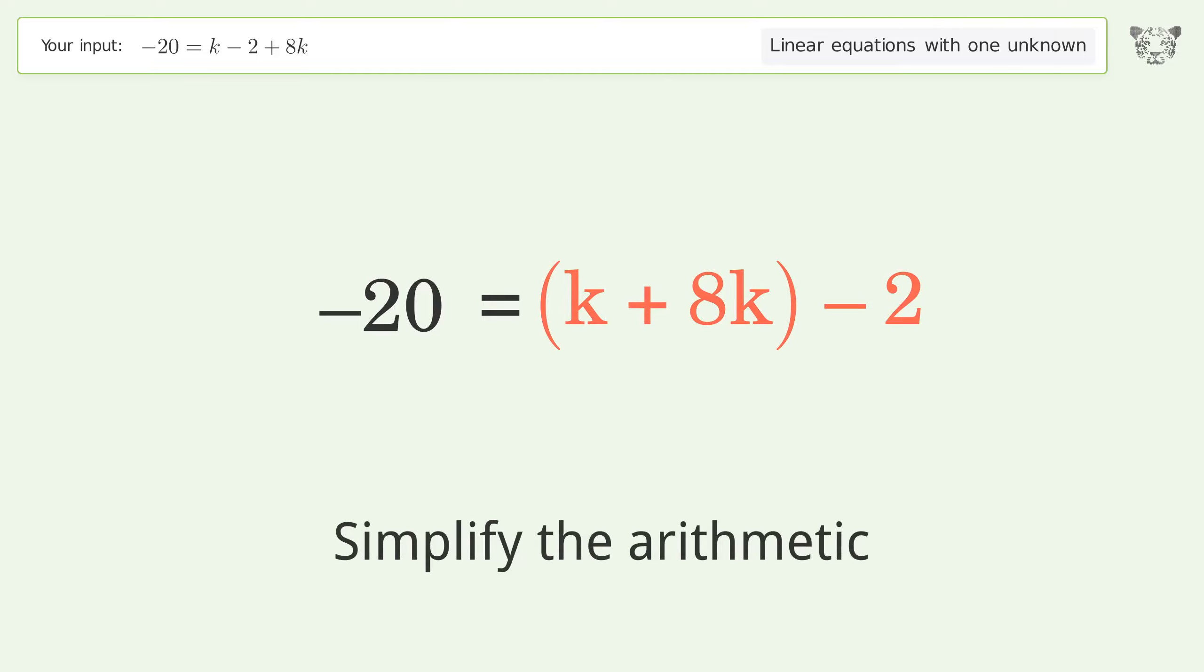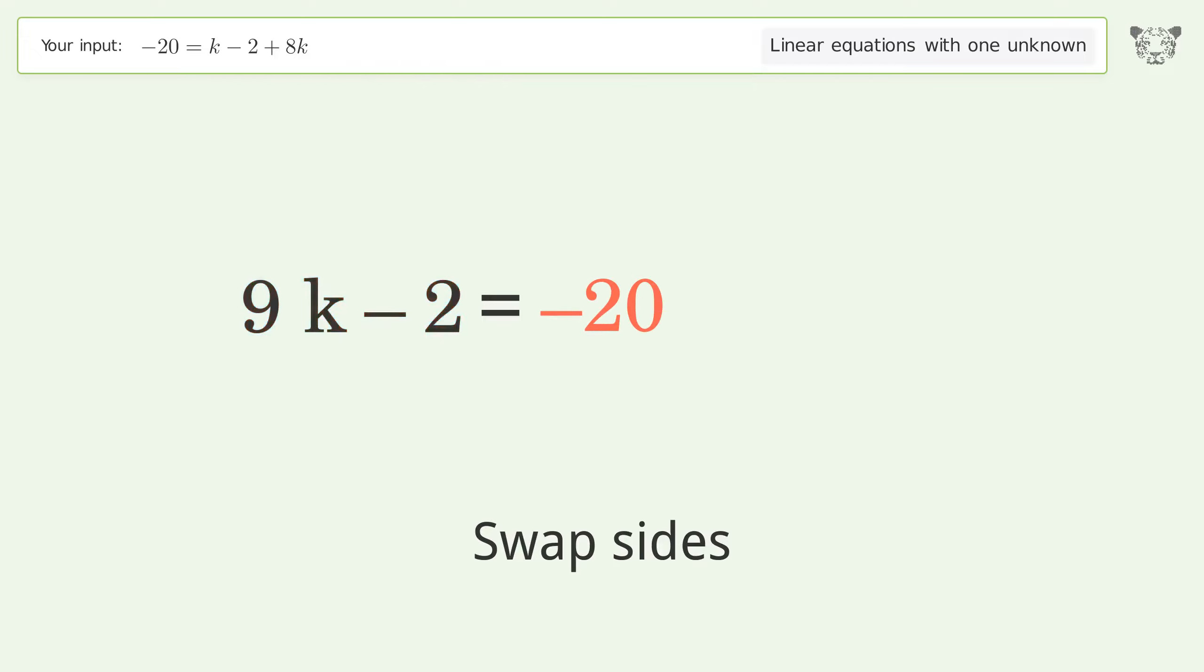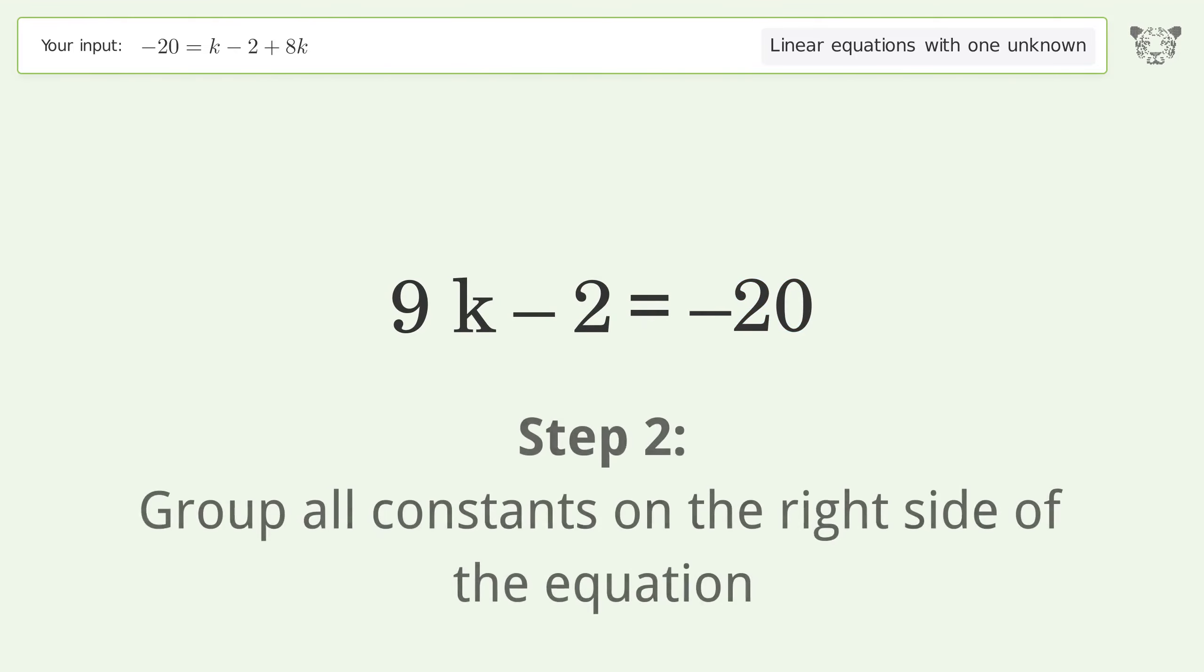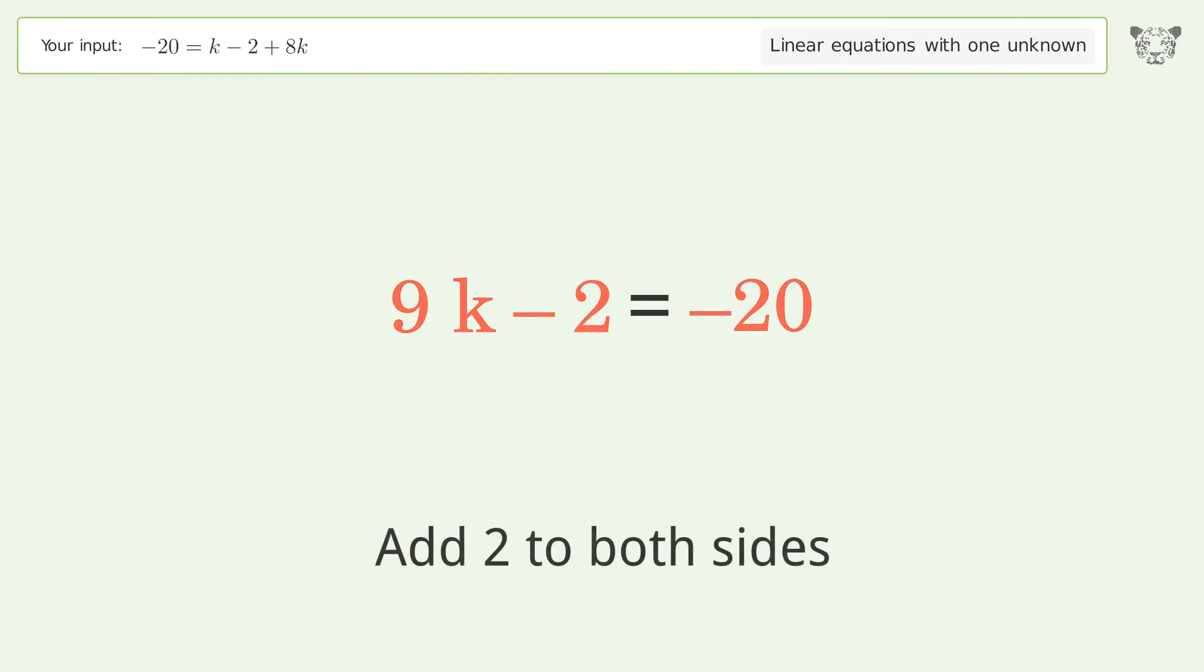Simplify the arithmetic. Swap sides. Group all constants on the right side of the equation. Add 2 to both sides.